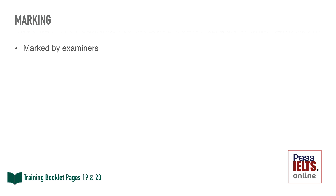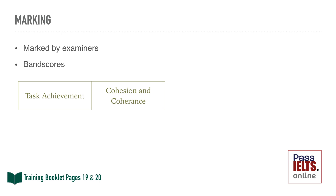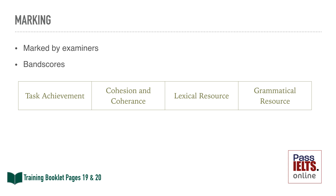Now we'll have a look at how task one is marked. It is marked by examiners and you are given band scores. They use marking criteria which is partly accessible to the public and which you can find in your training booklet. There are four criteria for the task: task achievement, cohesion and coherence, vocabulary, and grammar. We will look at this criteria and its relevance to the writing task in this lesson.